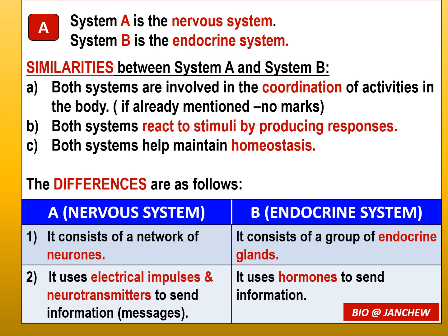Try writing your answer first before comparing with the model answer. System A is the nervous system; system B is the endocrine system. Similarities: both systems are involved in the coordination of activities in the body. Both systems respond to stimuli — for the nervous system the stimulus is pain. Both systems help maintain homeostasis, such as the regulation of temperature.